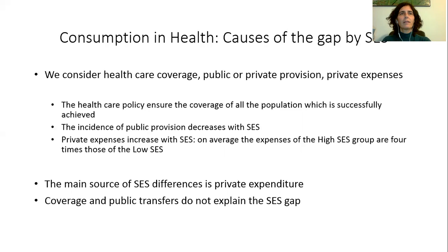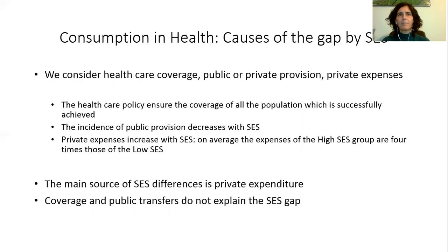A second cause of the health gaps may be differences in public transfers, which would come from differences in the incidence of coverage type within each CES. But the incidence of public provision decreases with CES, so healthcare public transfers do not explain the CES gap. On the contrary, public transfers decrease with CES. The third cause of CES gaps is private expenses, which include fees, premiums, co-payment, pharmacy spending, etc. These expenses increase by CES. On average, for children under age 21, the expenses of the high CES group are four times those of the low CES group. As a result, the main source of CES differences is private expenditure.